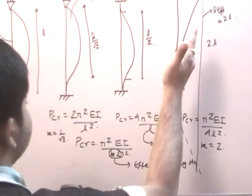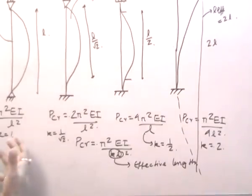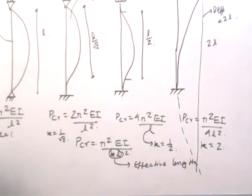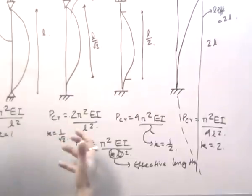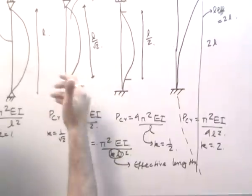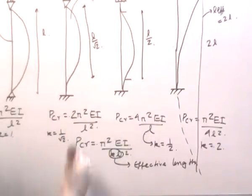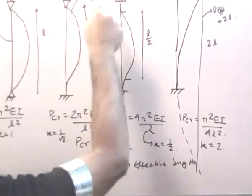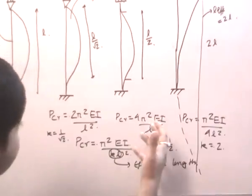The next case after fixed-free is hinge-hinge, where length effective equals L and the Euler critical load is π²EI/L². Then, replacing one hinge with a fixed connection adds rigidity, reduces the effective length, and increases PCR to 2π²EI/L². Finally, replacing both ends with fixed connections further reduces the effective length, giving the highest PCR of 4π²EI/L².